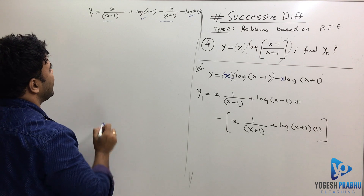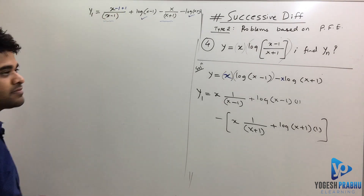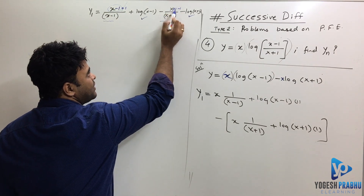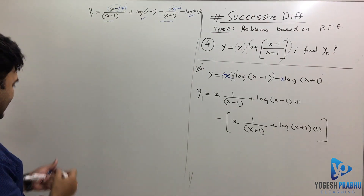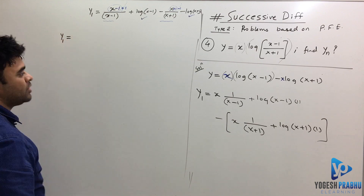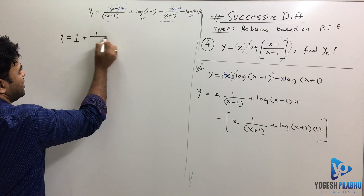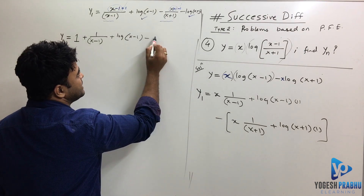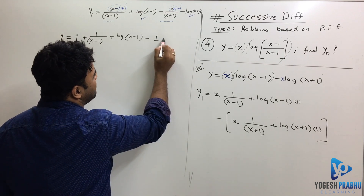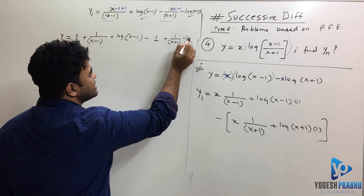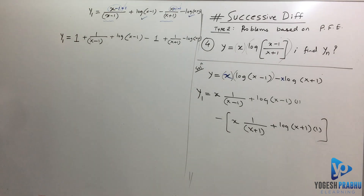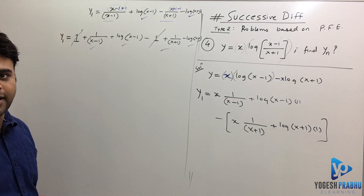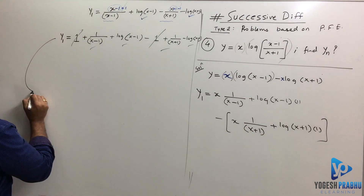For the x/(x−1) term, I write (x−1+1)/(x−1) which splits into 1 + 1/(x−1). Similarly x/(x+1) = (x+1−1)/(x+1) = 1 − 1/(x+1). Substituting back, y₁ = 1 + 1/(x−1) + log(x−1) − 1 + 1/(x+1) − log(x+1). The +1 and −1 cancel out, and now every remaining term is in standard form, so I can write the nth differentiation directly.